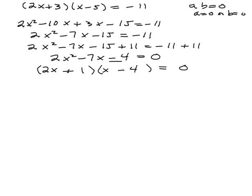So now we're going to use the property of 0. Now we do have 0 on one side, and we can say 2x plus 1 equals 0 or x minus 4 equals 0 and solve each of those equations separately.